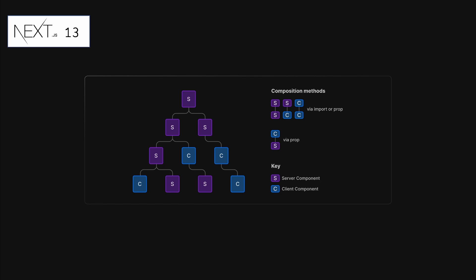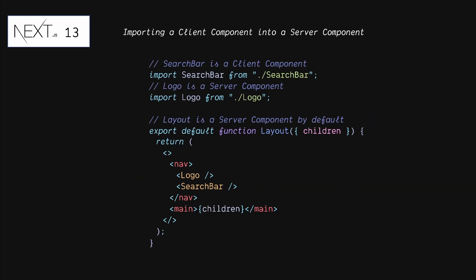We can import a client component normally using the import statement or via props. Here is an example: instead of making the whole layout a client component, we move the search bar logic — which is interactive — into a client component, and then bring it into the layout using the import statement. By moving the interactive logic into a separate component, other components like the logo can be rendered on the server, improving performance.